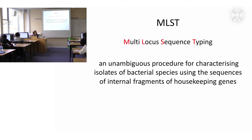Housekeeping genes are genes that, if you have a particular organism of interest — I work on Staph aureus — it will have certain genes that all of that species have, and they're essential for that species. They won't get any mutations that delete the gene because they're housekeeping genes, absolutely essential. They tend to have a slower mutation rate. What you do is take a few of these housekeeping genes — normally six to eight — and look at some internal fragments of these genes.